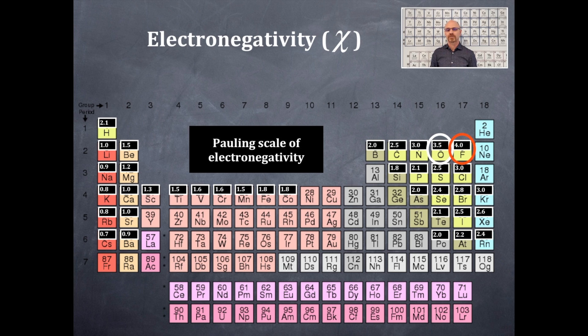Then we have a tie for third and fourth place, and that is nitrogen and chlorine share the same value of electronegativity. Then there's another tie, and that next tie is carbon and sulfur at 2.5. Notice it's decreasing as you move away from fluorine. I'm going to highlight one other here, and that is hydrogen on the far left-hand side. Hydrogen is an electronegativity value of 2.1.